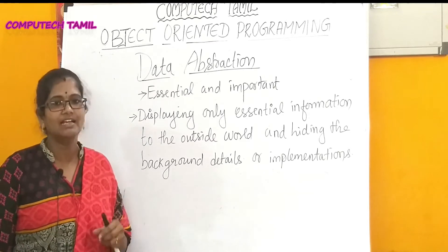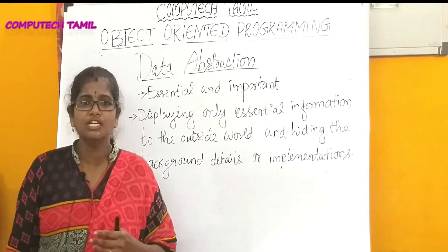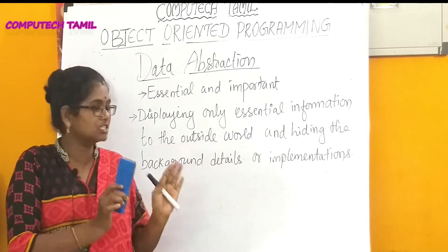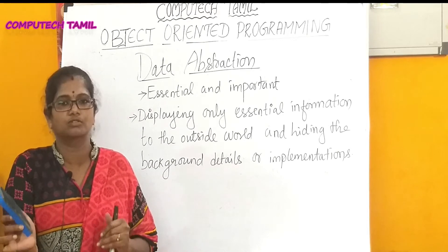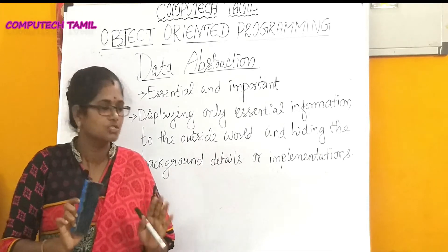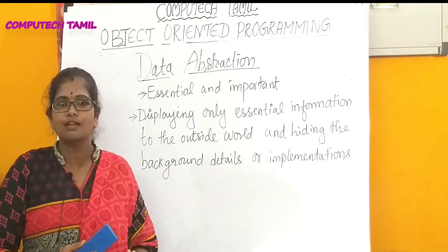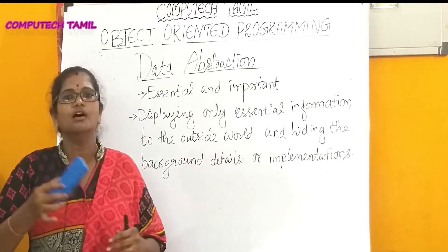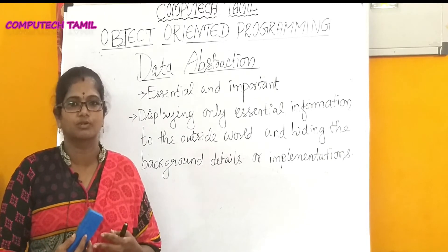Data abstraction means displaying only essential information to the outside world and hiding the background details or implementation. Data abstraction is an essential and important concept of object-oriented programming. The essential part that is visible to the outside world is the member function.